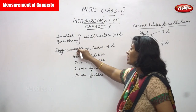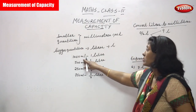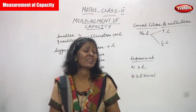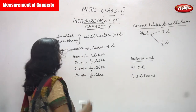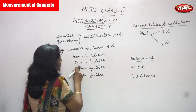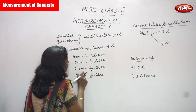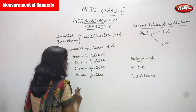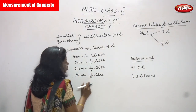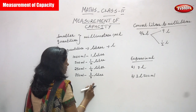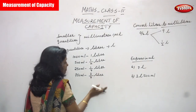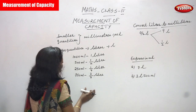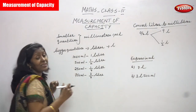Here is the formula you have to memorize: 1000 ml is equal to one liter. 500 ml is equal to half a liter. 250 ml is equal to one-quarter liter (one by four liter). And 750 ml is equal to three-quarter liter (three by four liter).